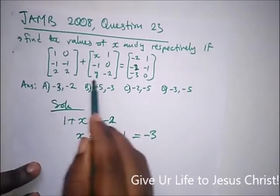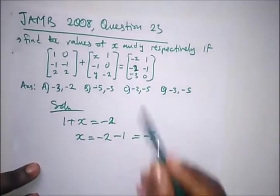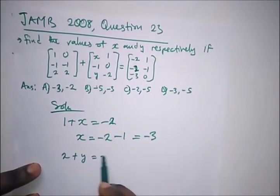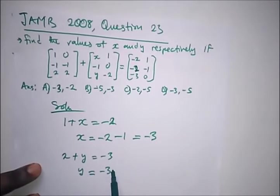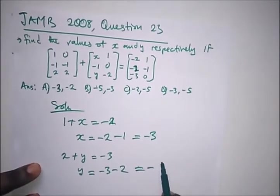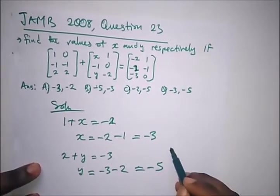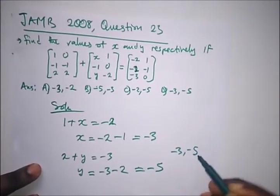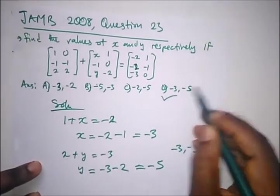It also says find y, and we have 2 plus y equal to minus 3. Taking 2 to the other side, we have minus 3 minus 2 gives us minus 5. Our answer is therefore minus 3 comma minus 5, and it's option D.